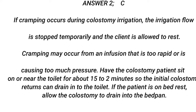Answer 2: C. If cramping occurs during colostomy irrigation, the irrigation flow is stopped temporarily and the client is allowed to rest. Cramping may occur from an infusion that is too rapid or causing too much pressure. Have the colostomy patient sit on or near the toilet for about 15 to 20 minutes so the initial colostomy returns can drain into the toilet. If the patient is on bed rest, allow the colostomy to drain into the bedpan.